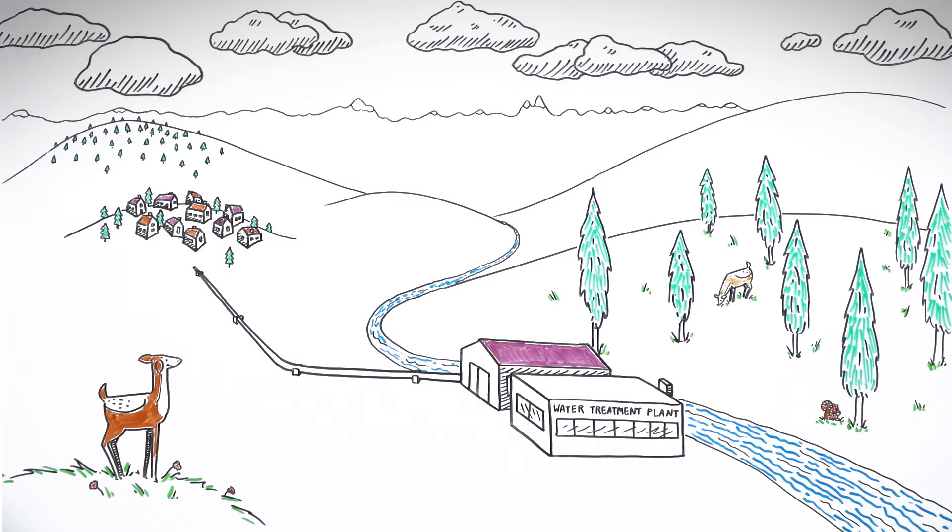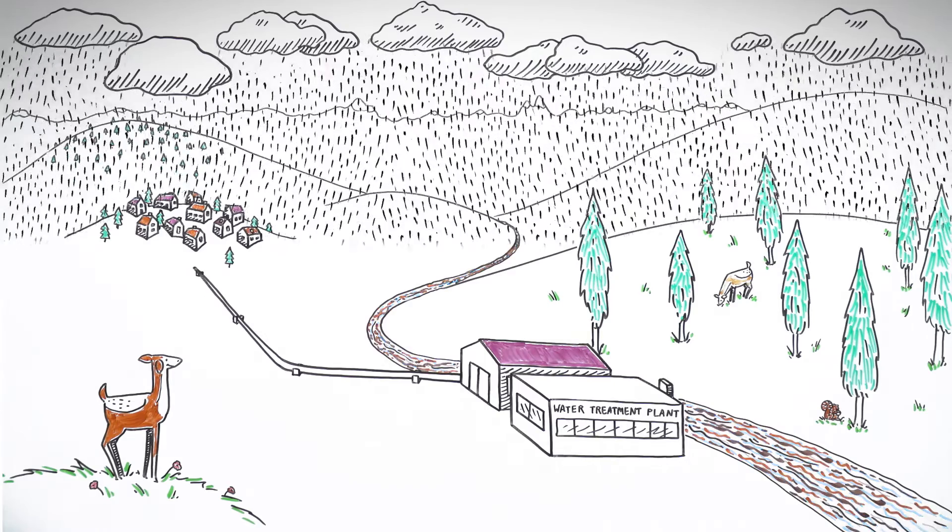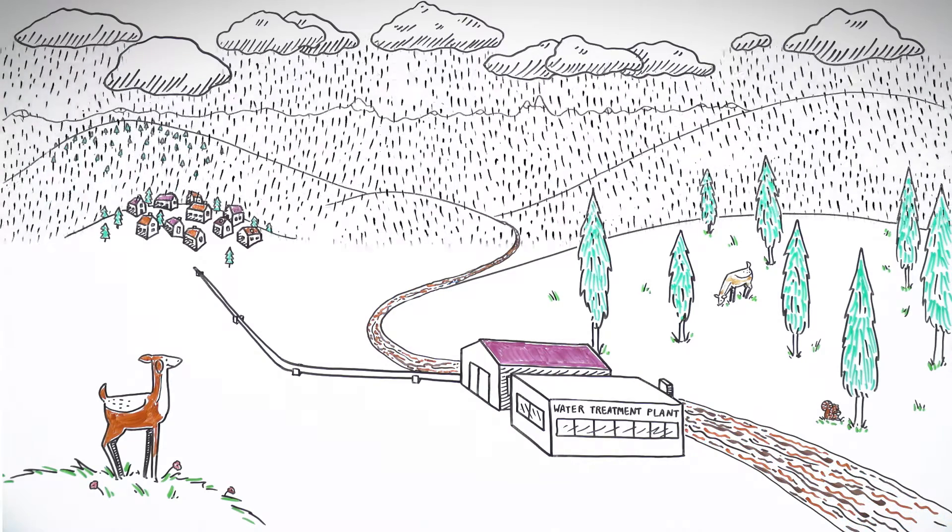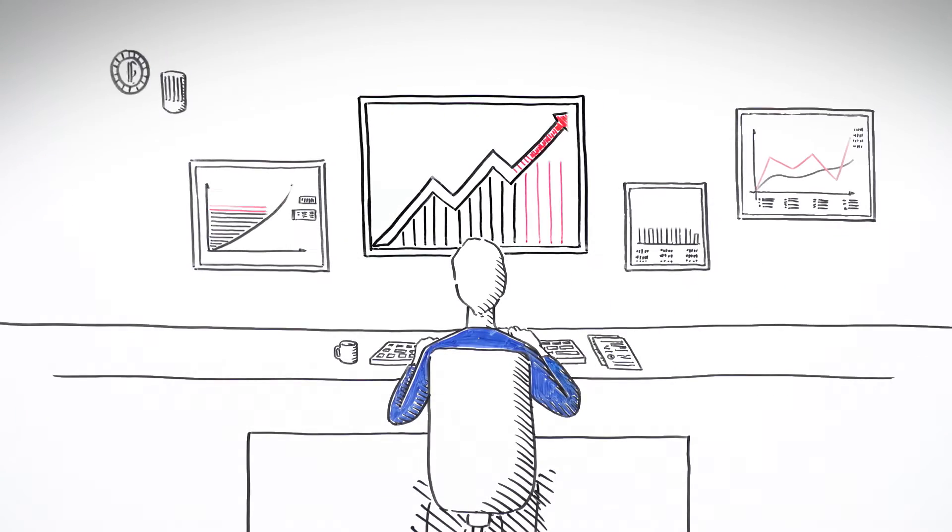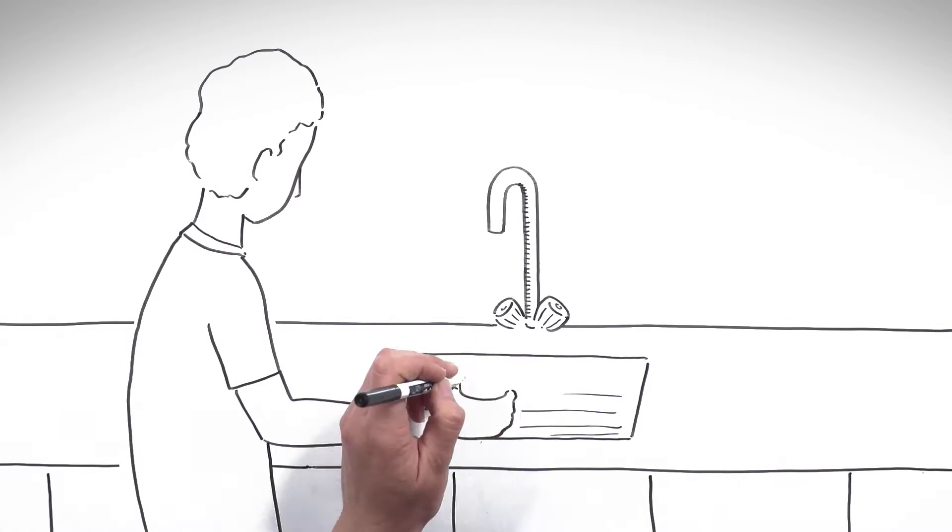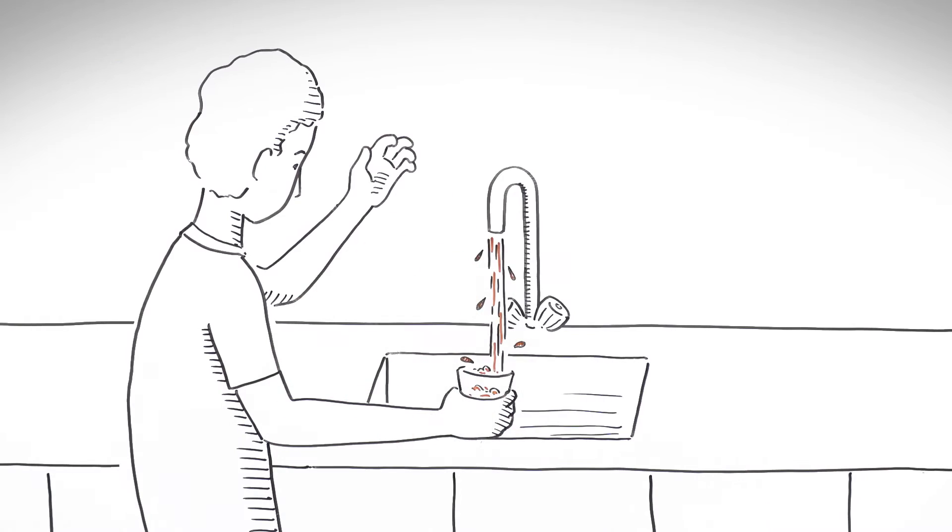But sometimes, heavy mountain rains force tons of silt and soil into the river. And the current treatment plant can't handle the job of providing the required water quality. That's when the people of Hilltown find themselves without clean water for drinking, bathing, or washing clothes.